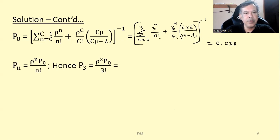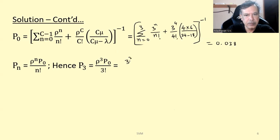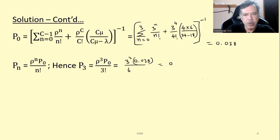Next, we need to find P_n using the first formula since n equals 3 lies between 1 and C. So P3 equals rho to the power 3 times P0 divided by n factorial, which is 3 cubed by 3 factorial, that is 27 by 6, times P0 equals 0.038. Calculating this, we get P3 equals 0.1698.